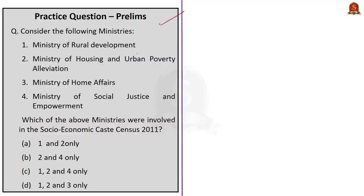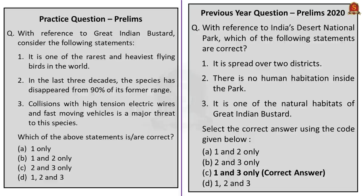See this question: Consider the following ministries - Ministry of Rural Development, Ministry of Housing and Urban Poverty Alleviation, Ministry of Home Affairs, and Ministry of Social Justice and Empowerment. Which of the above ministries were involved in the socio-economic caste census of 2011? Note that the Ministry of Social Justice and Empowerment is not involved in the socio-economic caste census of 2011. When we eliminate that, we can arrive at the correct answer, option D: 1, 2 and 3 only.